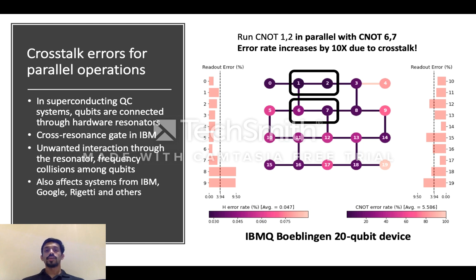In fact, on IBM systems, our measurements found that crosstalk can actually worsen the gate error rates by up to 10x. And this can significantly impact a program's overall reliability.